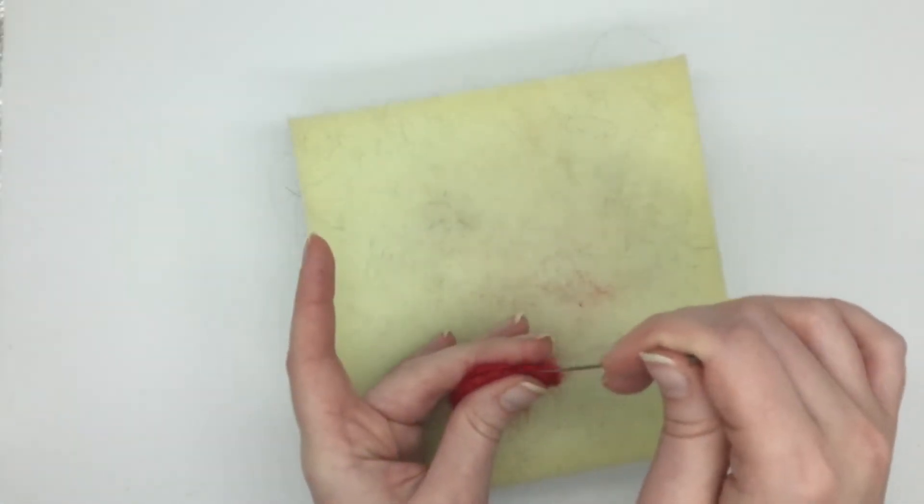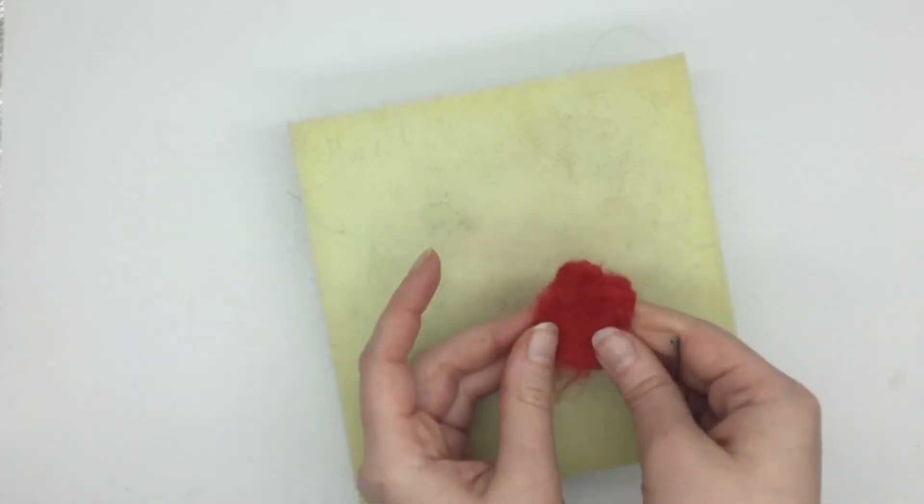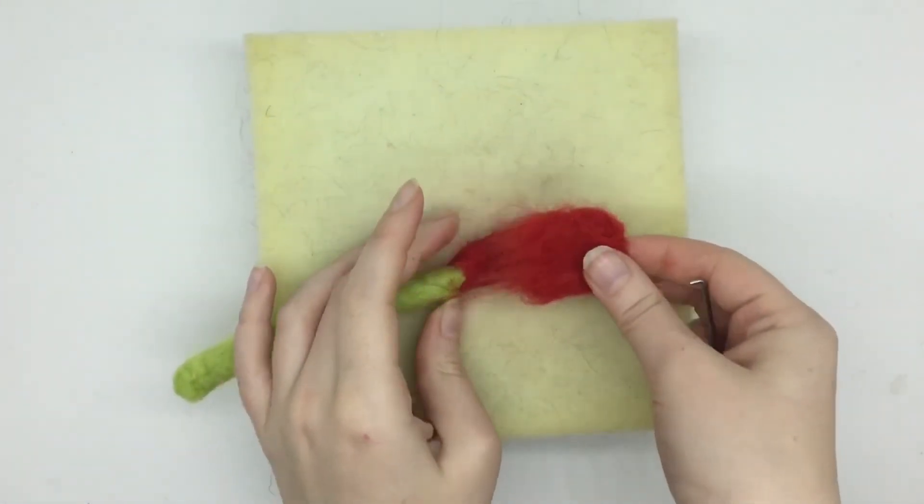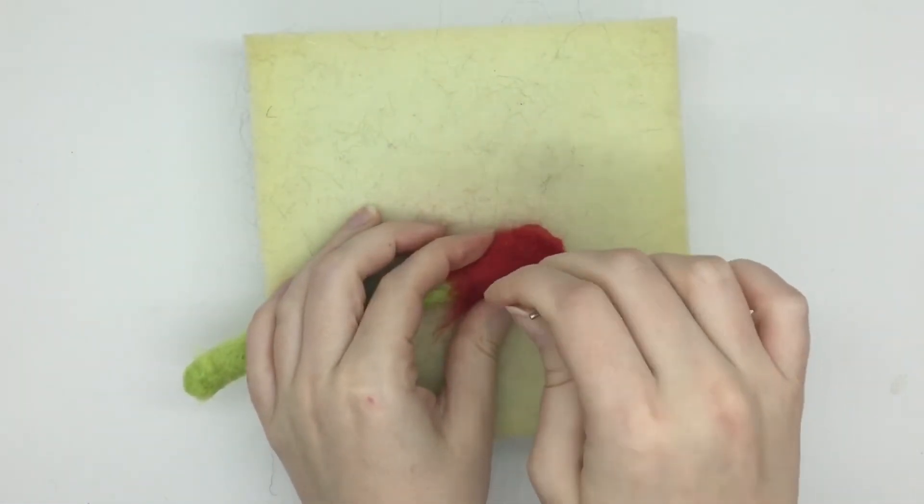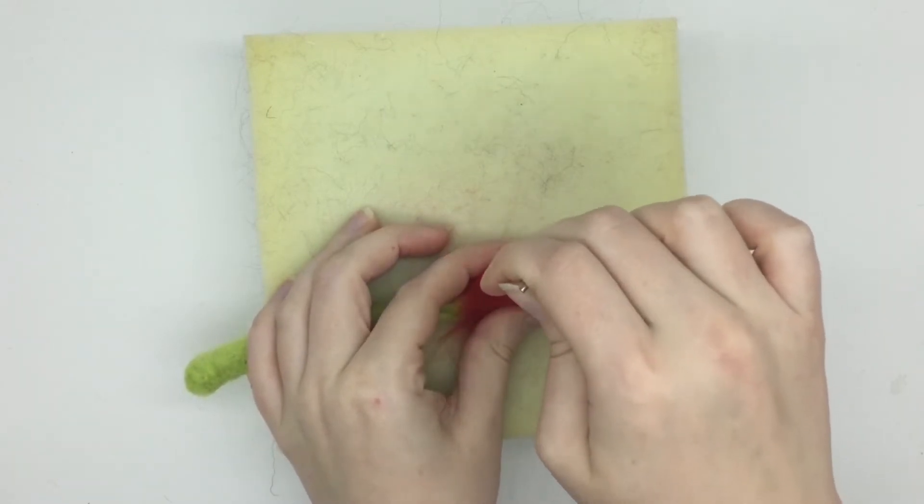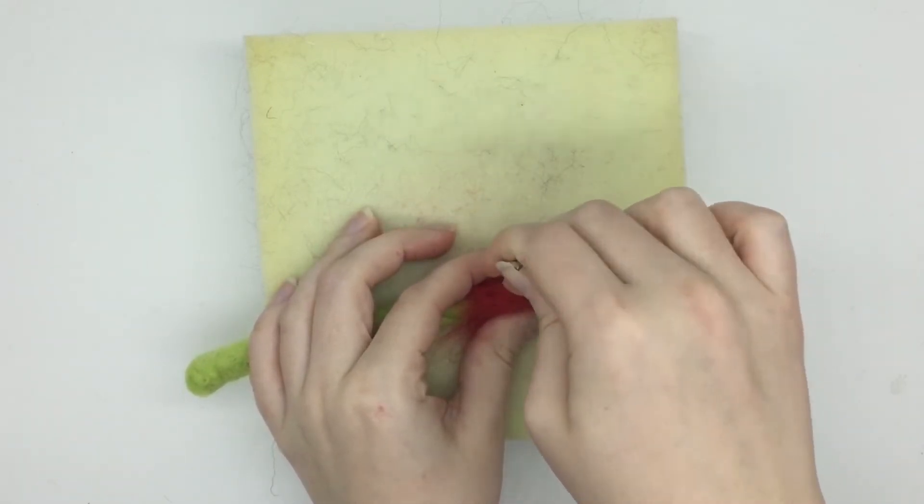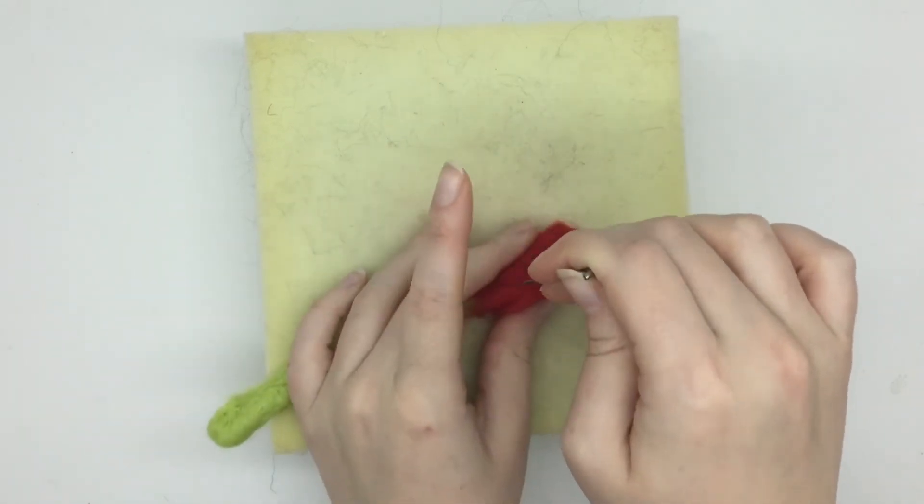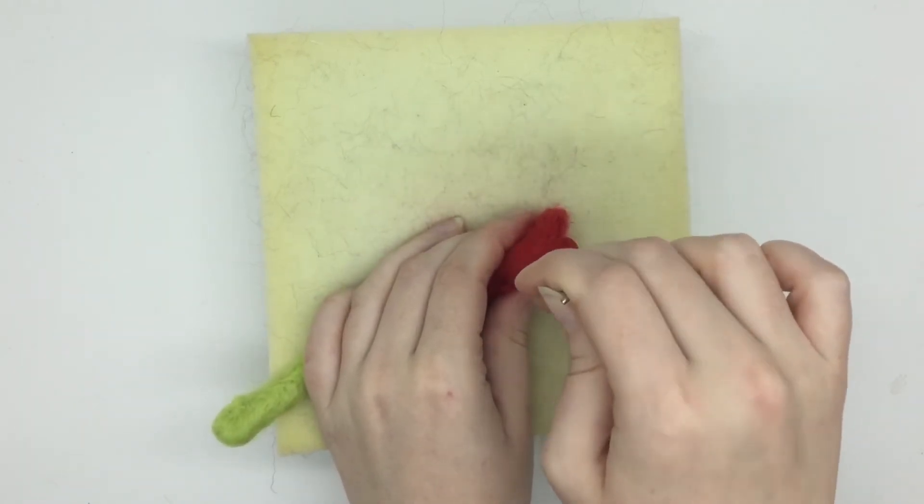I'm just going to felt those loose fibers onto the base of the bud of the rose, and that just attaches the first petal.